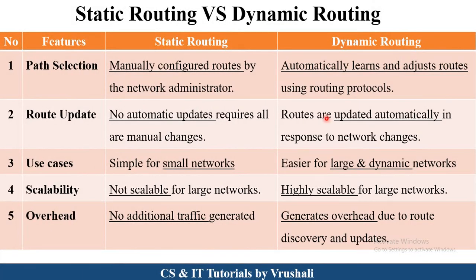Now let's see the differences between static and dynamic routing. In path selection, the network administrator manually configures the particular path in static routing, but in dynamic routing routers automatically learn and adjust routes using routing protocols. In static routing a particular route does not update automatically, but in dynamic routing the path is automatically updated. Static routing is used for simple and small networks, while dynamic routing is used for large and dynamic networks — that's why static routing is not scalable whereas dynamic routing is highly scalable. In static routing no additional traffic is generated because there is a pre-decided confirmed path, but in dynamic routing multiple paths generate overhead due to route discovery and updates.